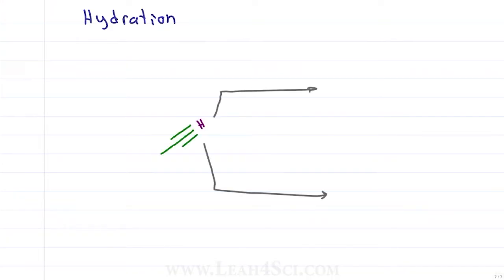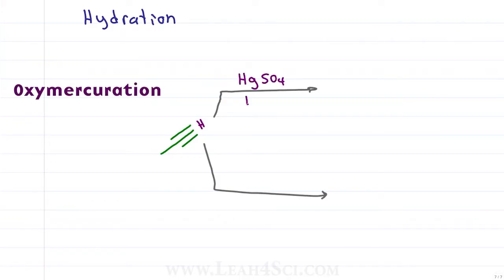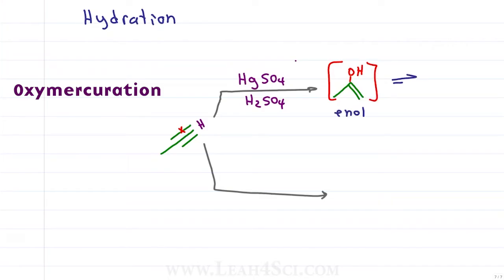As with alkenes, we have multiple hydration reactions, where the difference is visible only in a terminal alkyne. For oxymercuration I use a slightly different catalyst — HgSO4 and H2SO4 — to break just one pi bond and get a Markovnikov or more substituted hydroxy group. Since this intermediate is an unstable enol, it will automatically tautomerize through keto-enol tautomerization to give a ketone.